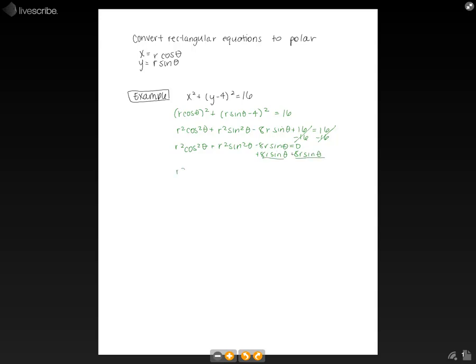Now let's move our 8r sine theta to the other side by adding to both sides. And that gives us r squared cosine squared theta plus r squared sine squared theta is equal to 8r sine theta.